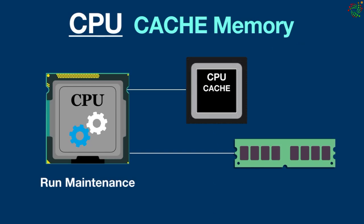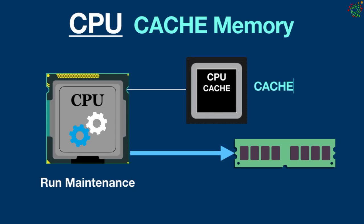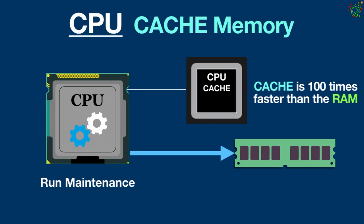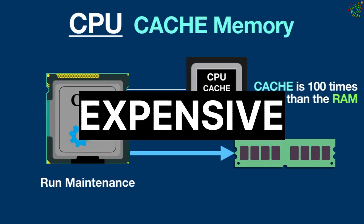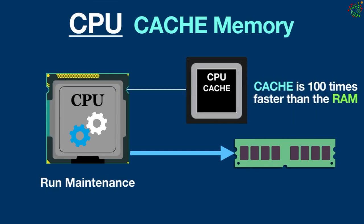RAM is the main memory of your computer, but it is farther away from the CPU than the cache memory and is not as fast. Cache is typically 100 times faster than RAM. If cache is so fast, why is not all data stored there? Because cache storage is limited and very expensive for its space. So it only makes sense to keep the most accessed data there and leave everything else to the RAM.